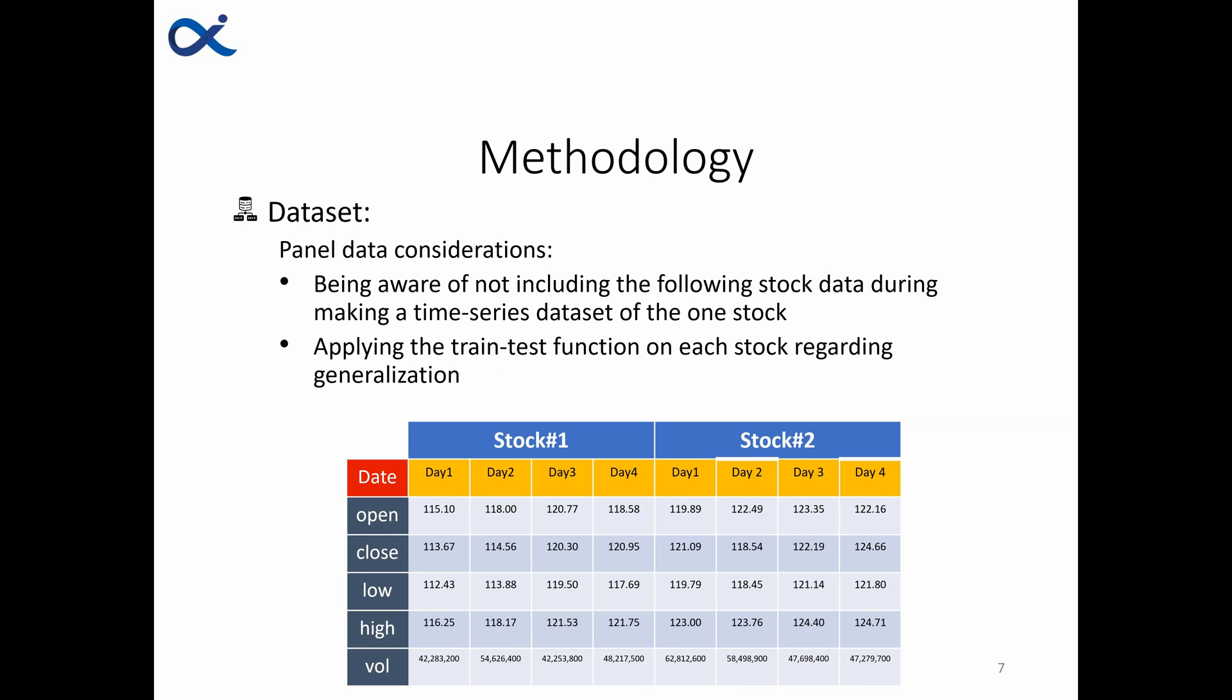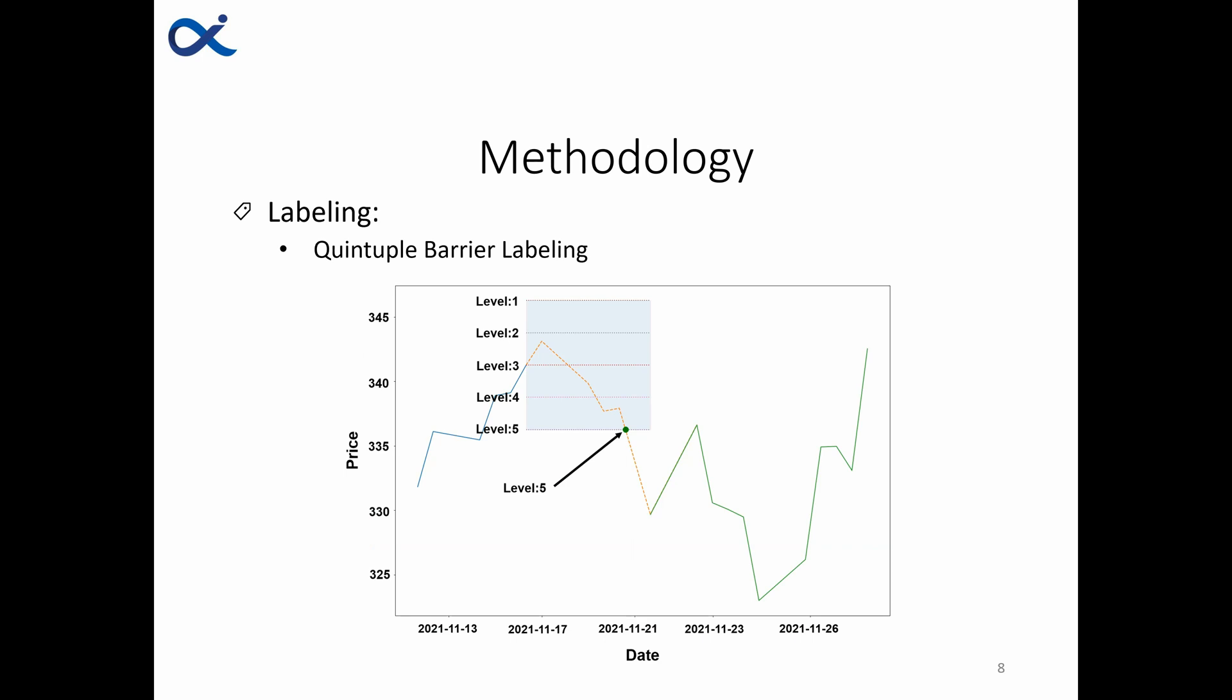The next thing is to be sure for splitting data into train and test sets the training data wouldn't be completely from one stock, for example stock number one, and the test data would be from stock number two. We have to have training and test data from both stocks. The other consideration is that each stock has different distribution and they need to be scaled separately.